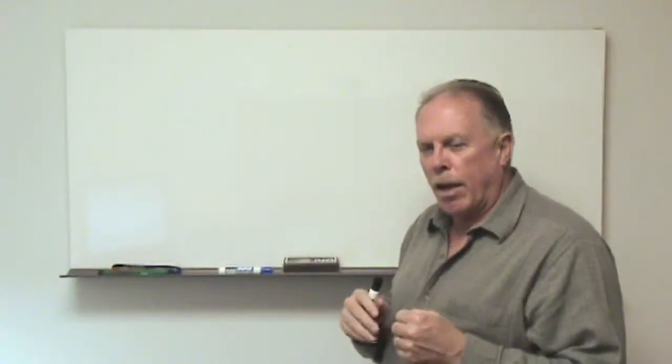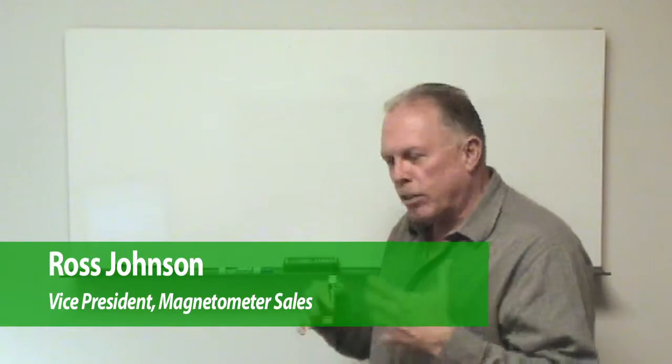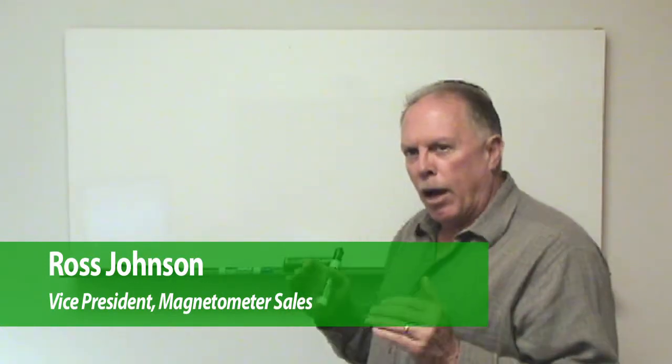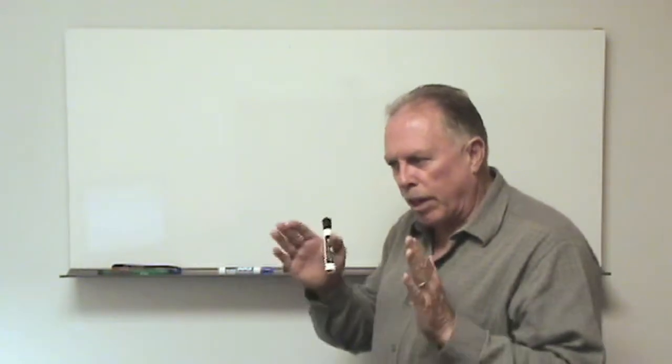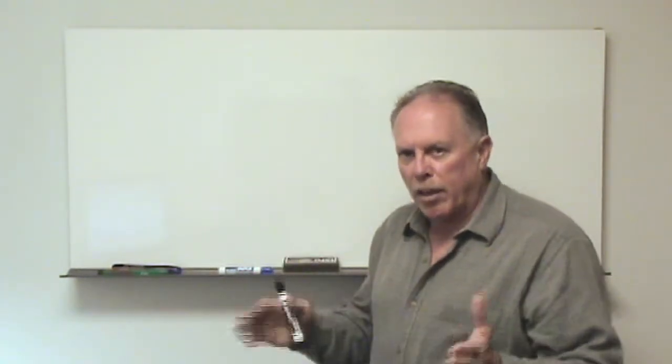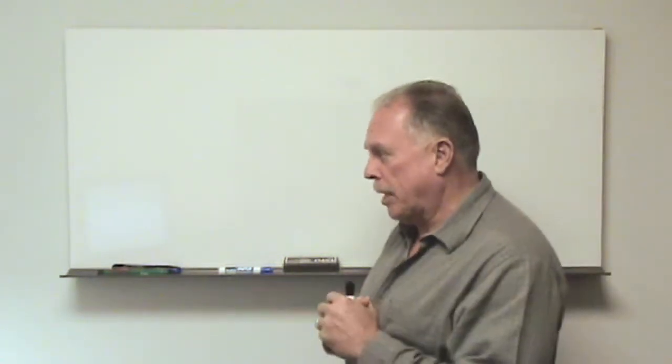Today we're going to have the fifth and final video in the series and we're going to discuss specifically how we use the magnetometer to configure a survey to find a target of a given size, and then that will inform us about the line spacing for our survey grid.